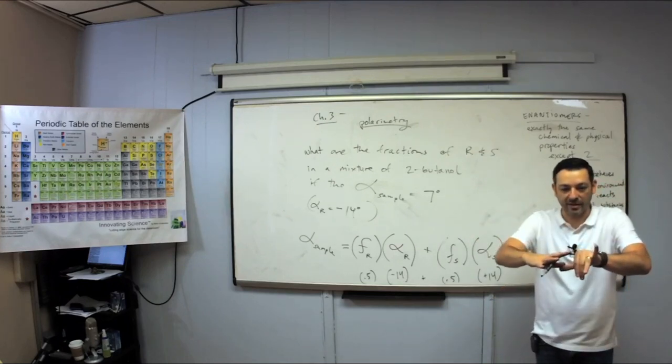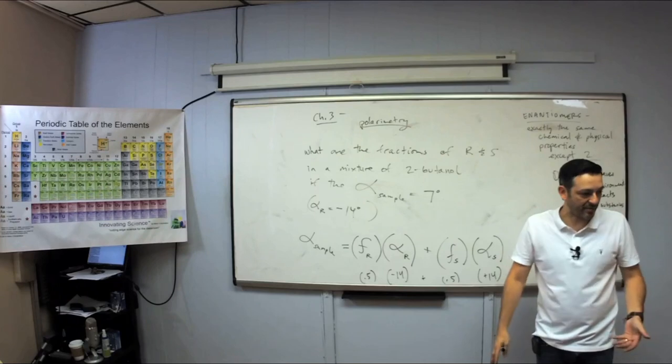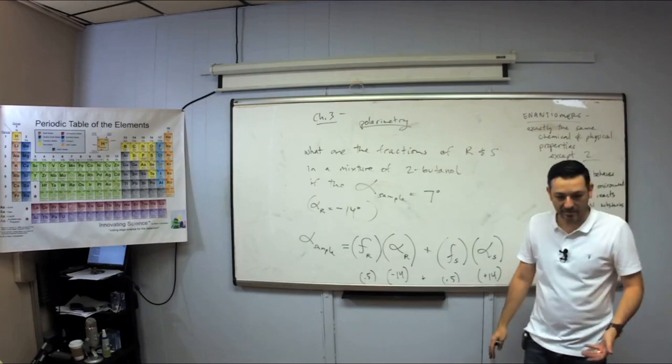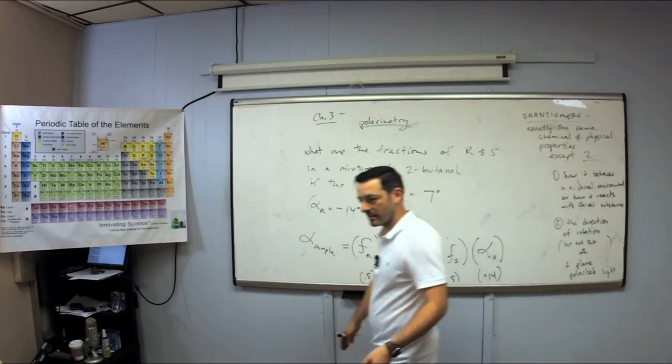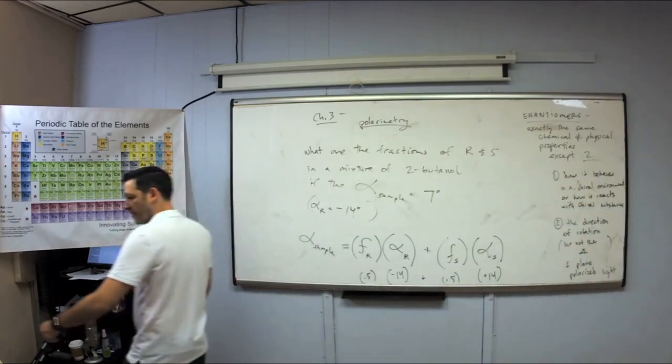You could have chiral parts and the whole thing could not be chiral. That's the idea of meso — take molecules, glue them together, have chiral parts, and the whole thing's not chiral.